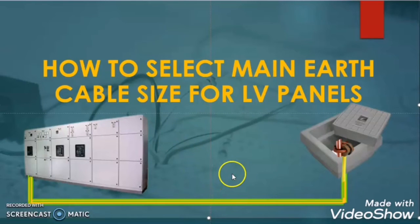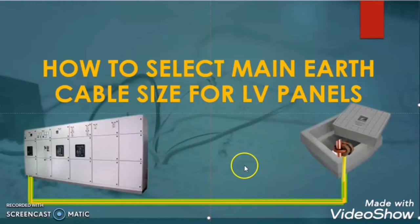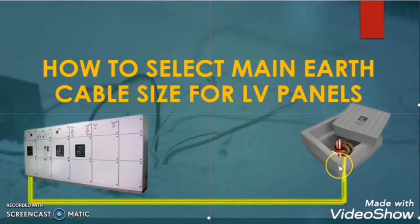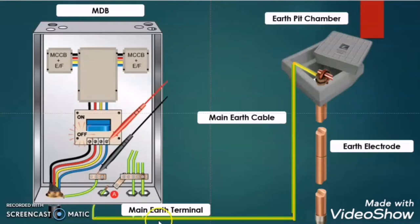In one of my previous videos, I have discussed about the cable selections for phase cables and neutral cables. But this video is dedicated to knowing how to calculate the main earth cable which is connecting the main earth terminal of the panel to the earth electrode. In this video, we will size the main earth cable as per ADDC and DIVA regulation.